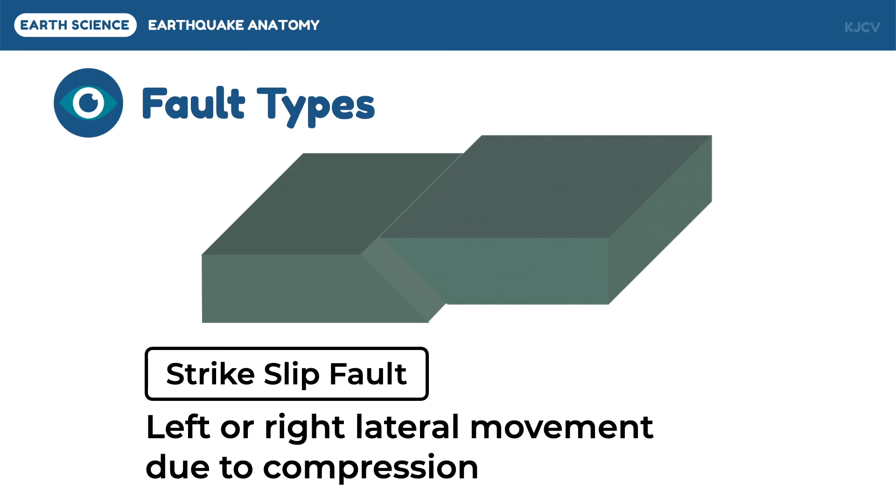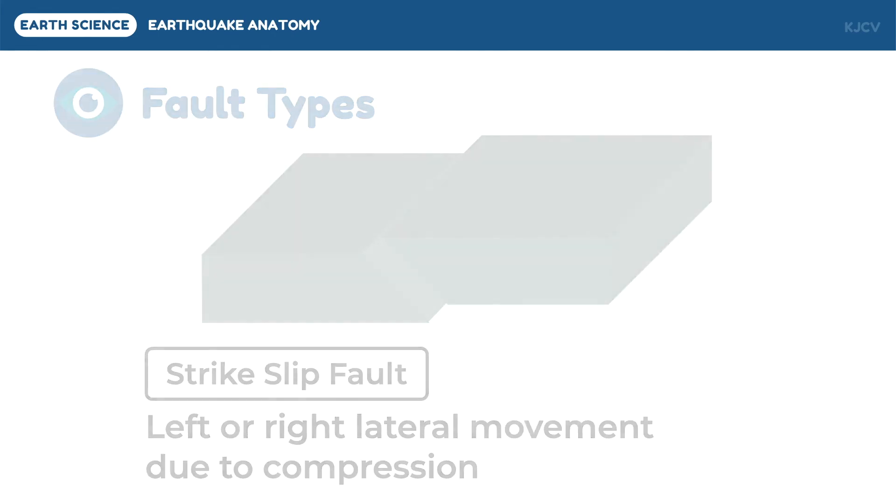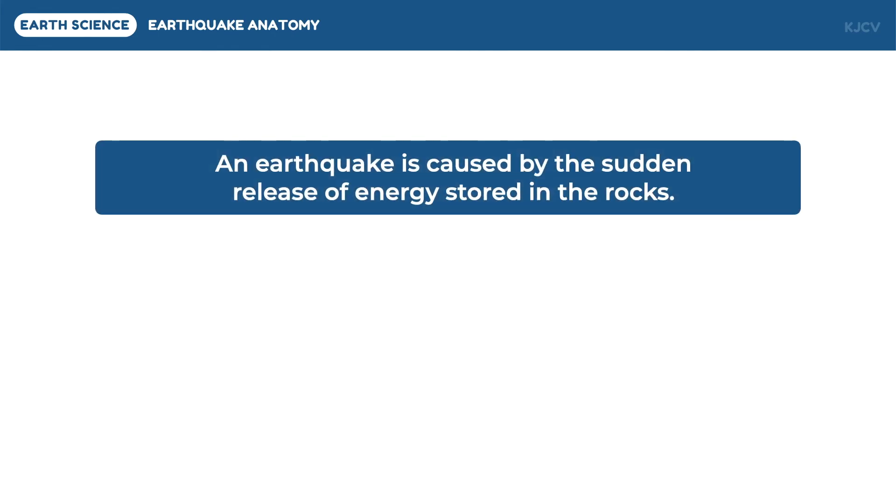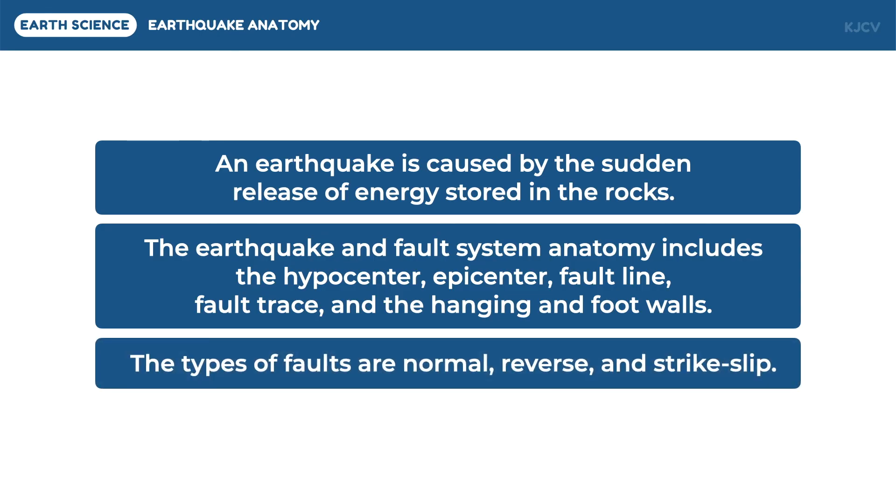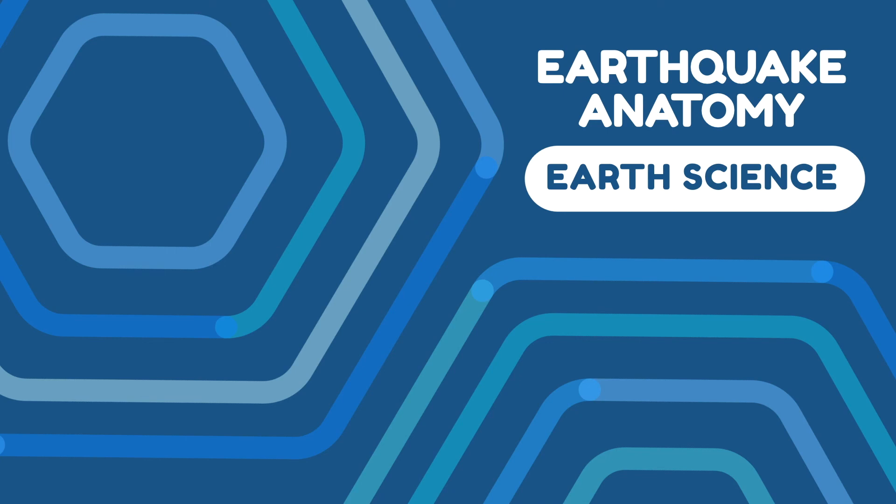To summarize this lesson, let us review the following key points: an earthquake is caused by the sudden release of energy stored in the rocks. The earthquake and fault system anatomy includes the hypocenter, epicenter, fault line, fault trace, and the hanging and foot walls. And lastly, the types of faults are normal, reverse, and strike-slip. And that ends our discussion on earthquake anatomy.